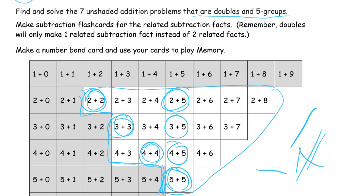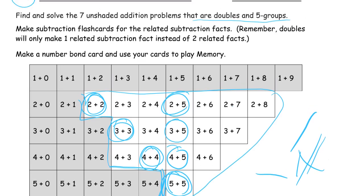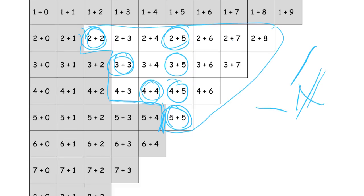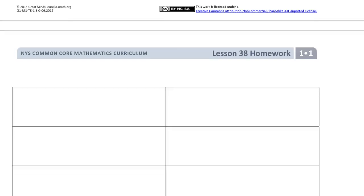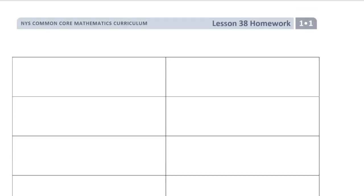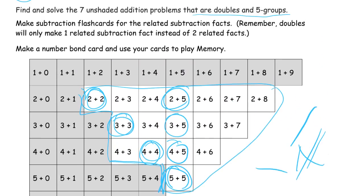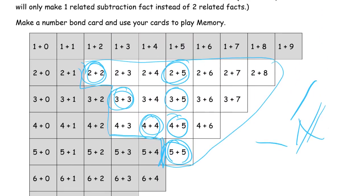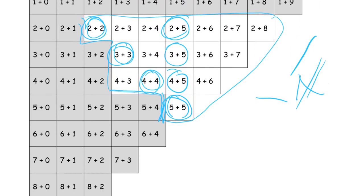So those are the five group ones and the doubles. And on the next page we're going to make subtraction flashcards for the related subtraction facts. So the doubles — here are the addition sentences we're looking at.